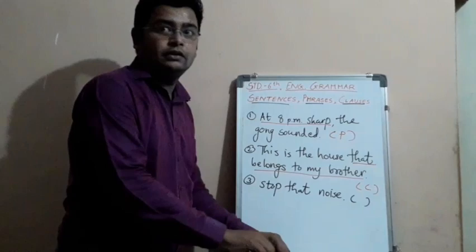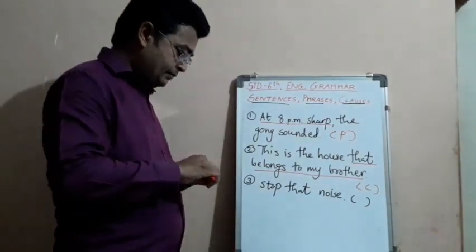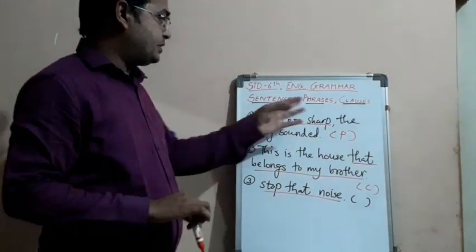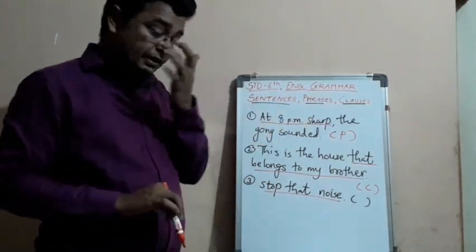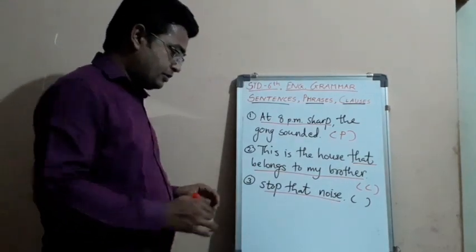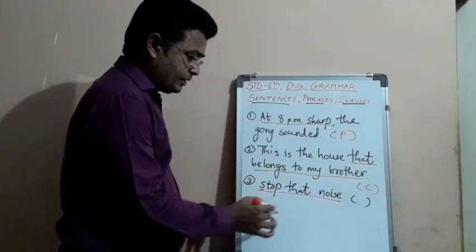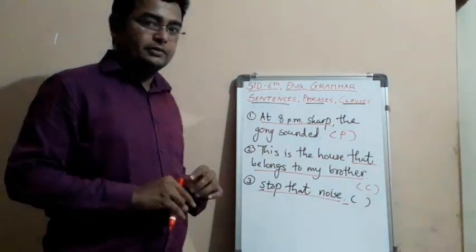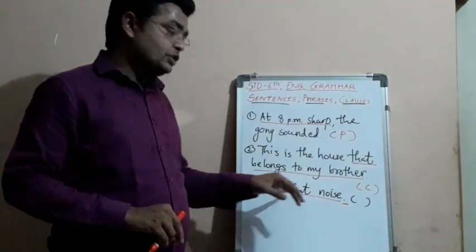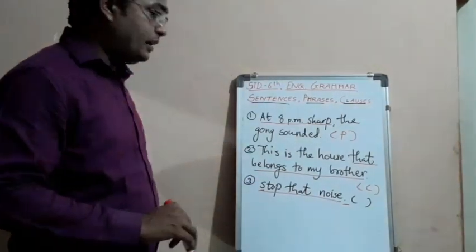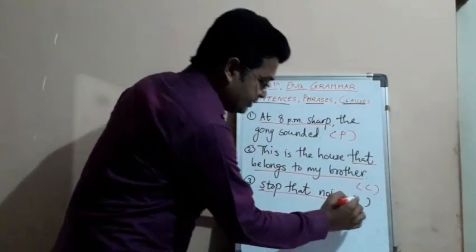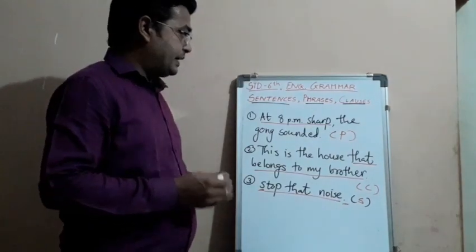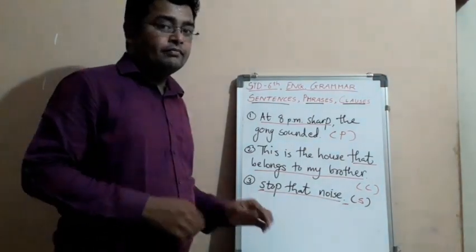Let us see the third sentence: 'Stop that noise.' Here, all three words are underlined. Can you identify if it is a phrase, clause, or sentence? Yes, that is right — it is a sentence, because it starts with a capital letter, it ends with a full stop, and when we read 'stop that noise,' someone is being harassed by unwanted sound and is asking it to stop. We have a clear sense — it is an example of a sentence. I hope that you have understood sentences, phrases, and clauses. Thank you very much.